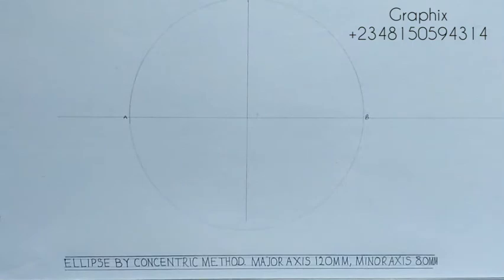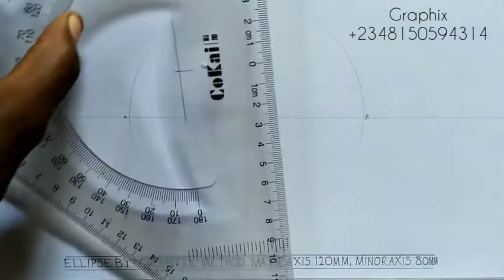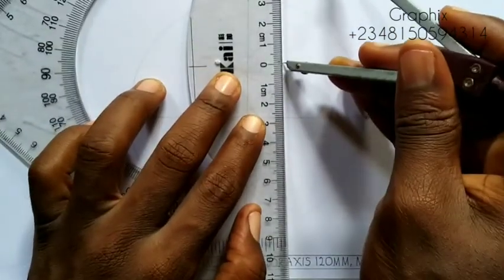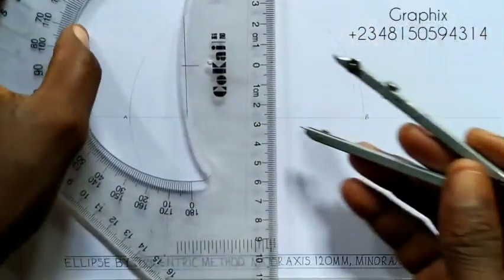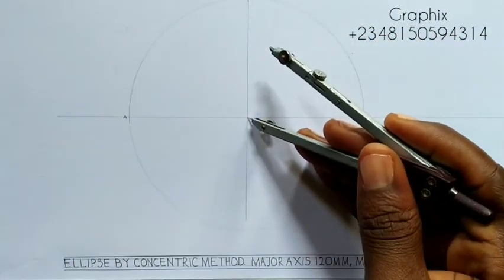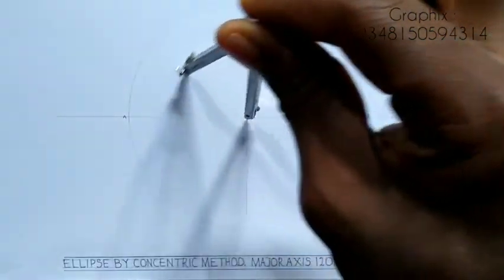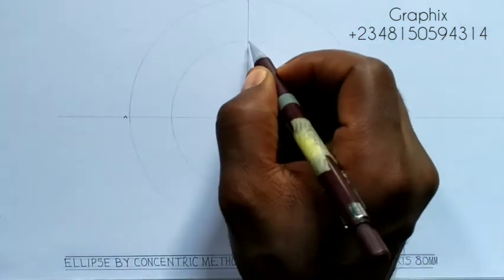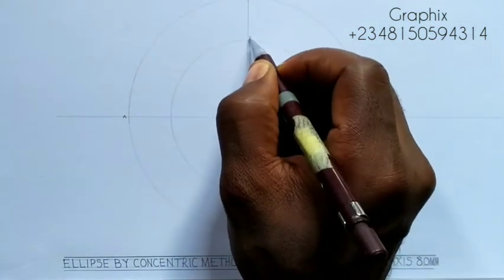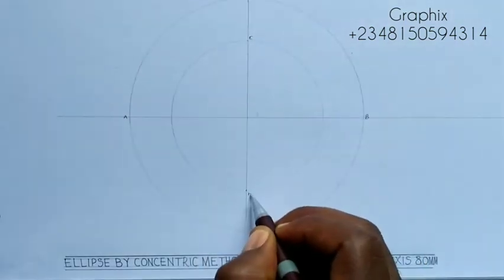The next step is to draw the minor circle from the minor axis. You take half of the minor axis, which is 40mm. I will place the compass at the center and draw my circle. That is my minor circle. The vertical points — I will call this point C and this point D.